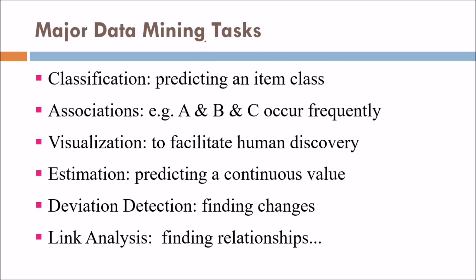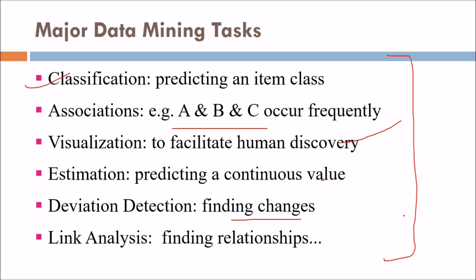The major data mining tasks include: classification — predicting an item's class; association — identifying items like A, B, and C that occur frequently together; visualization to facilitate human discovery; estimation — predicting certain values; deviation detection — finding changes; and link analysis — finding relationships. These are all the tasks involved in data mining.